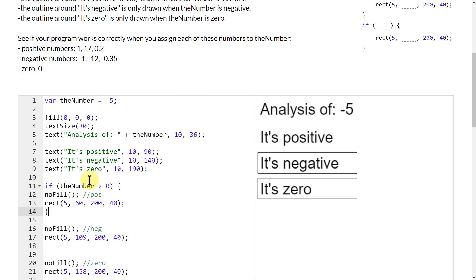So now since the number is currently five, it's not a positive number, it's not greater than zero. So this rectangle right here is not applying up here. If I change this, there it comes back.